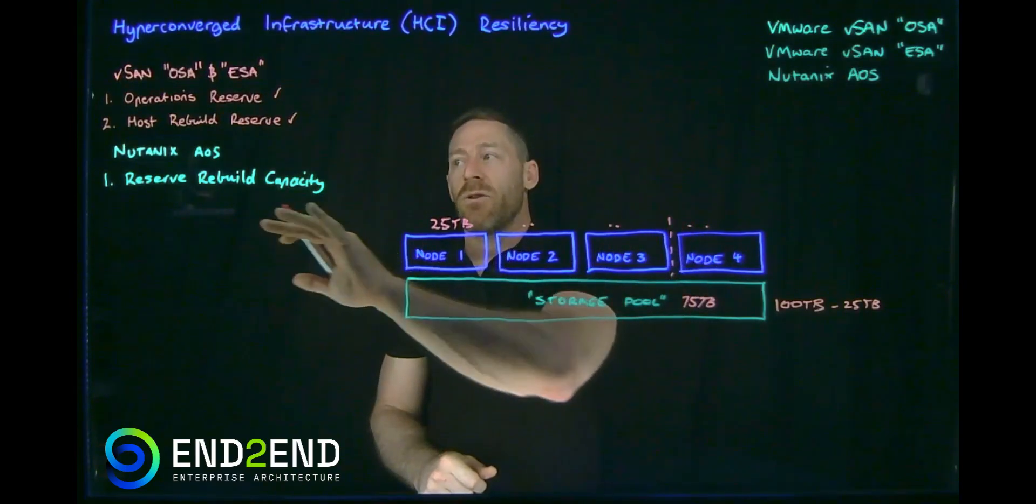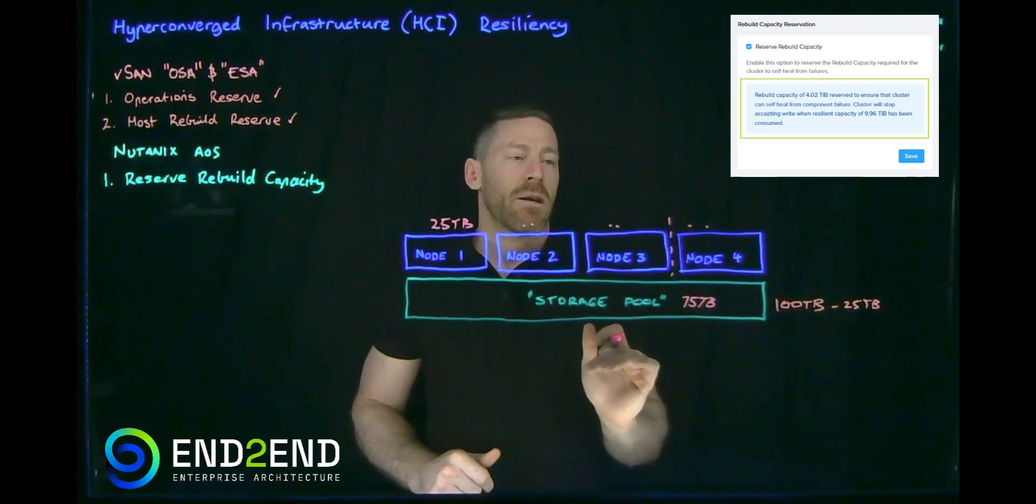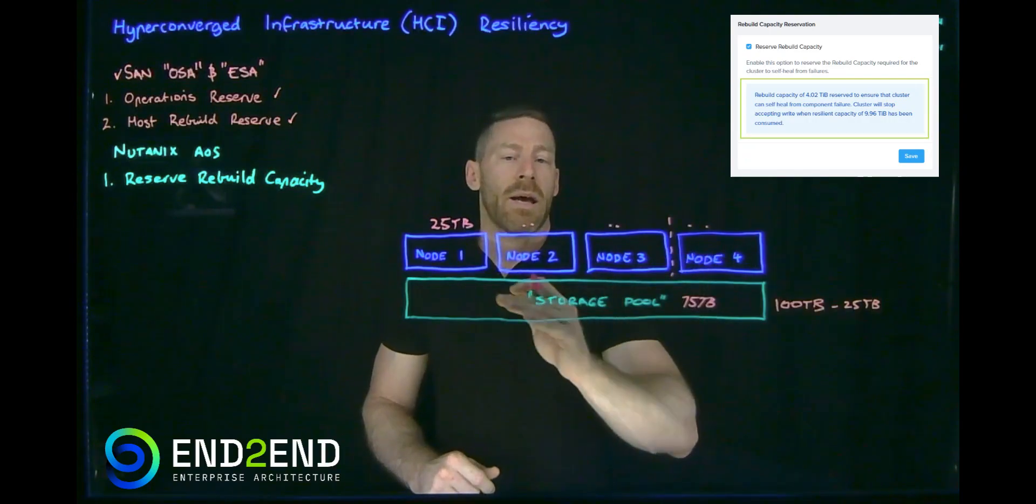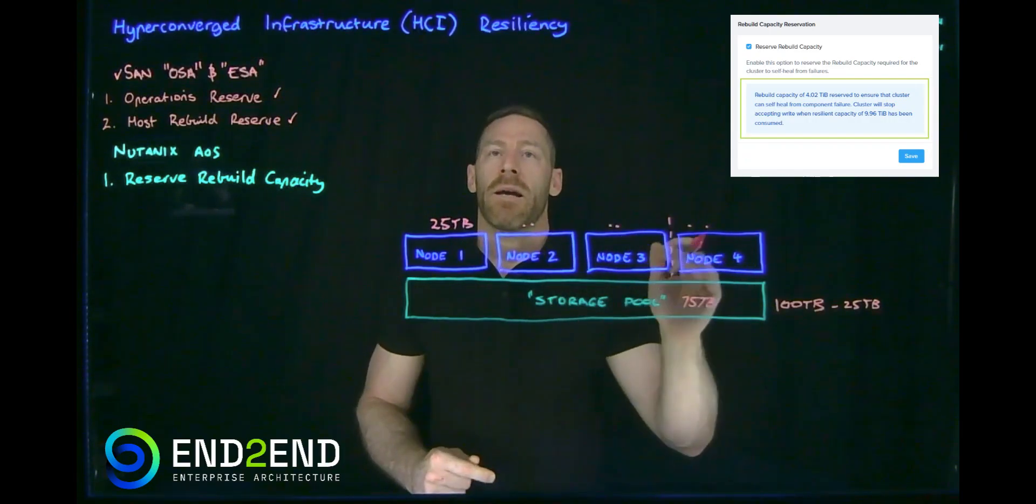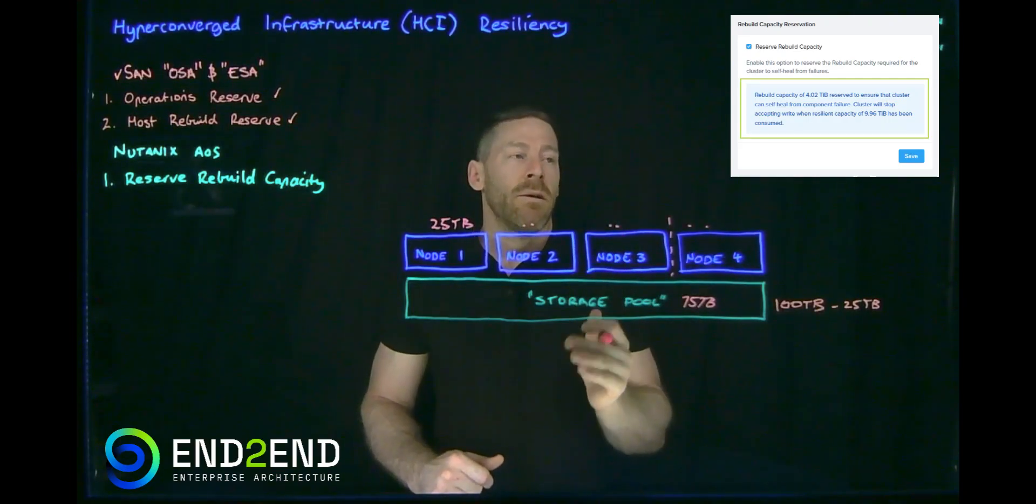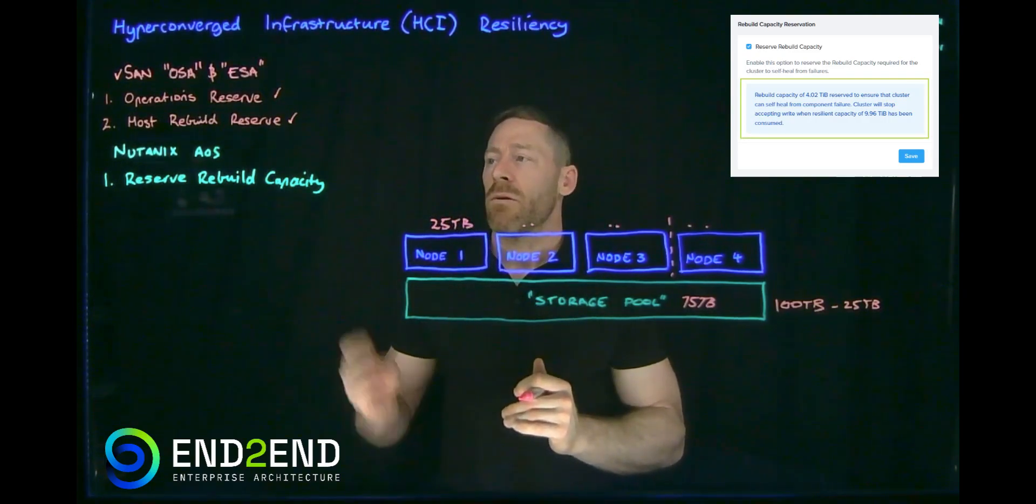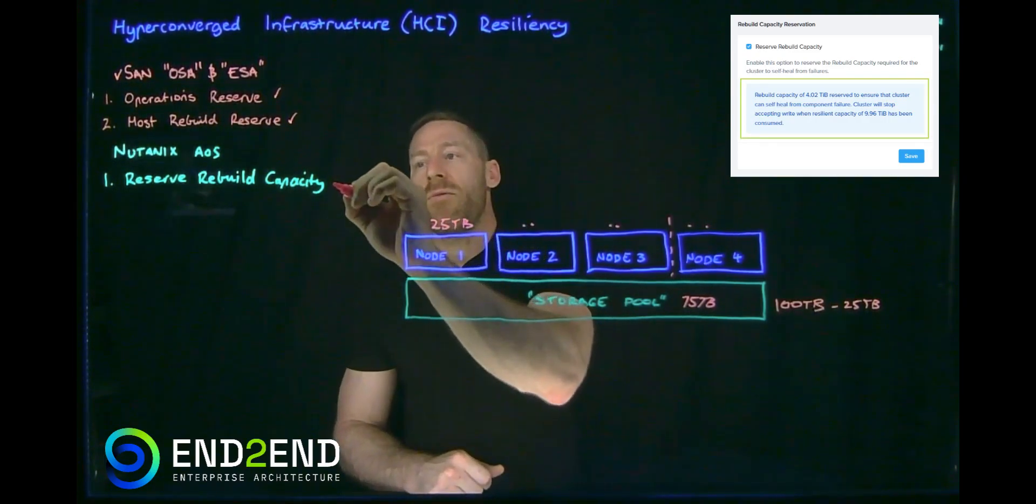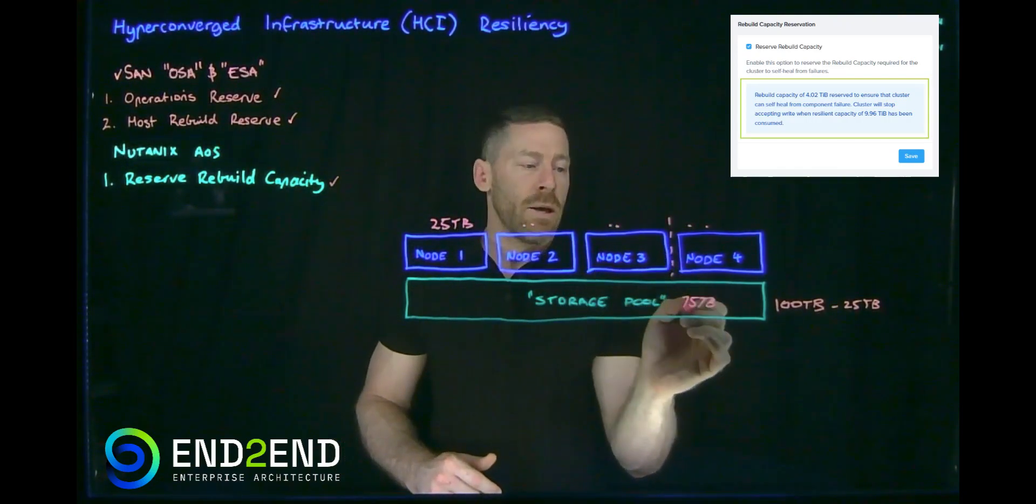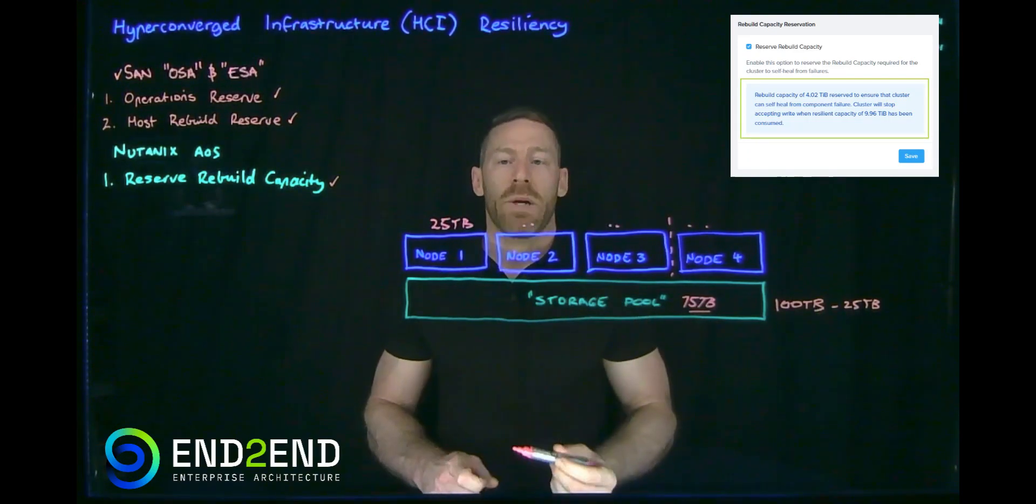Now if we talk about Nutanix, exactly the same concept. We've got a storage pool, we've got nodes contributing to the capacity. If we overfill the cluster, upgrades may not work, performance may degrade, and certainly we can't tolerate those failures and restore to that resilient state. So very important in the AOS world, we enable the host rebuild capacity option. And this makes sure that the amount of capacity that is presented to you as usable is this 75 terabyte number, which is realistically all that you should be using.